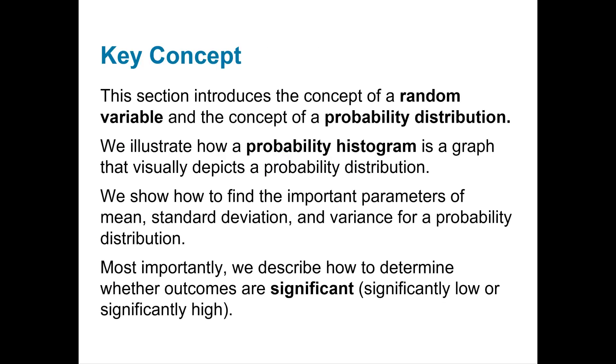In 5.1, we're going to be talking about the random variable and the concept of a probability distribution. We're going to be looking at a probability histogram and finding the mean, standard deviation, and variance for a probability distribution. We're going to continue to discuss whether outcomes are significant and what makes them significantly low or significantly high.